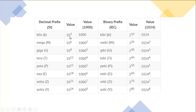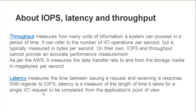This chart shows all kilobyte and kibibyte values. On the left side are decimal prefixes; on the right are binary prefixes, where 10³ equals 1000 and 2¹⁰ equals 1024. Next, throughput measures how many units of information a system can process in a period of time. It can refer to the number of IO operations per second but is typically measured in bytes per second. As per AWS, throughput measures data transfer rate to and from storage media in megabytes per second.